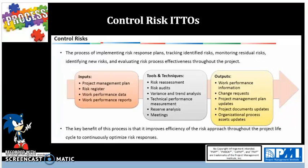Variance and trend analysis is where we look at earned value management formulas, which may be used for monitoring overall project risks. Technical performance measurements compare technical accomplishments during project execution to the schedule or technical achievement. Reserve analysis compares the amount of contingency reserves — money set aside for known risks that have been accepted — to the amount of risk remaining at any point in the project to determine if the remaining reserves are adequate. You'll also monitor management reserves to ensure money is set aside for unknown risks. Finally, meetings allow the risk management team to review risk control activities, and can also be led by the business continuity management team.